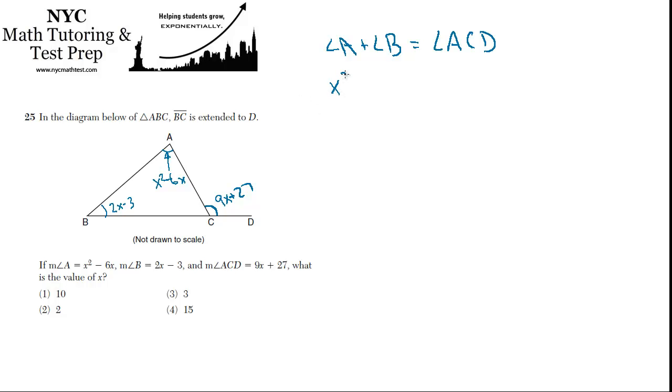So in this case, x squared minus 6x plus 2x minus 3 is equal to 9x plus 27. And the rest is just algebra, so let's get everything over onto the left. So I'll subtract 9x and subtract 27. So x squared minus 6x plus 2x minus 3 minus 9x minus 27 equals 0.